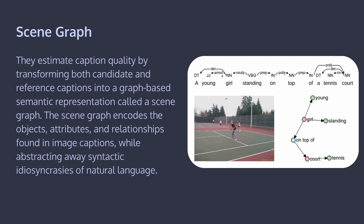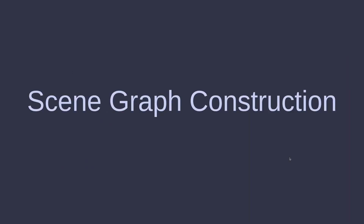They accomplish this through the construction of something called a scene graph. Caption quality is estimated by transforming both the candidate and reference captions into a graph-based semantic representation called a scene graph. The scene graph encodes the objects, attributes, and relationships found in image captions while abstracting away the syntactic details of natural language. For example, in the provided figure, we have 'girl' as a noun and subject connected to other grammatical elements.